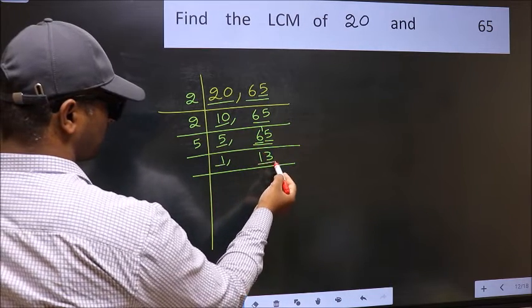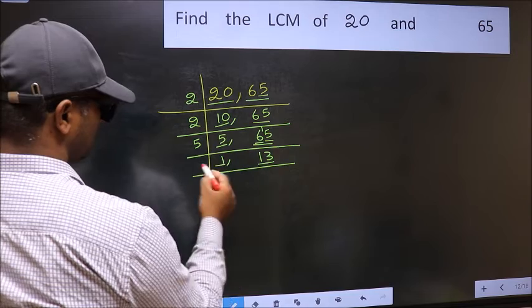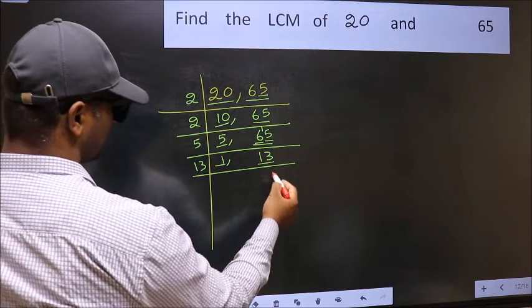We got 1 here, so focus on the next number 13. 13 is a prime number, so 13 once 13.